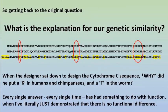Getting back to the original question: what is the explanation for our genetic similarity? This is the question I pose to everyone who denies common descent and puts forward a common design scenario. When the designer sat down to design this particular sequence, why did he put a K in humans and chimpanzees but a T in the worm? This is not specific to cytochrome C — it's across all proteins in the DNA of various animals. The allowable tolerance in these protein sequences is roughly 30 to 35%. Every single answer I've received has had something to do with function, when I've literally just demonstrated that there is no functional difference.